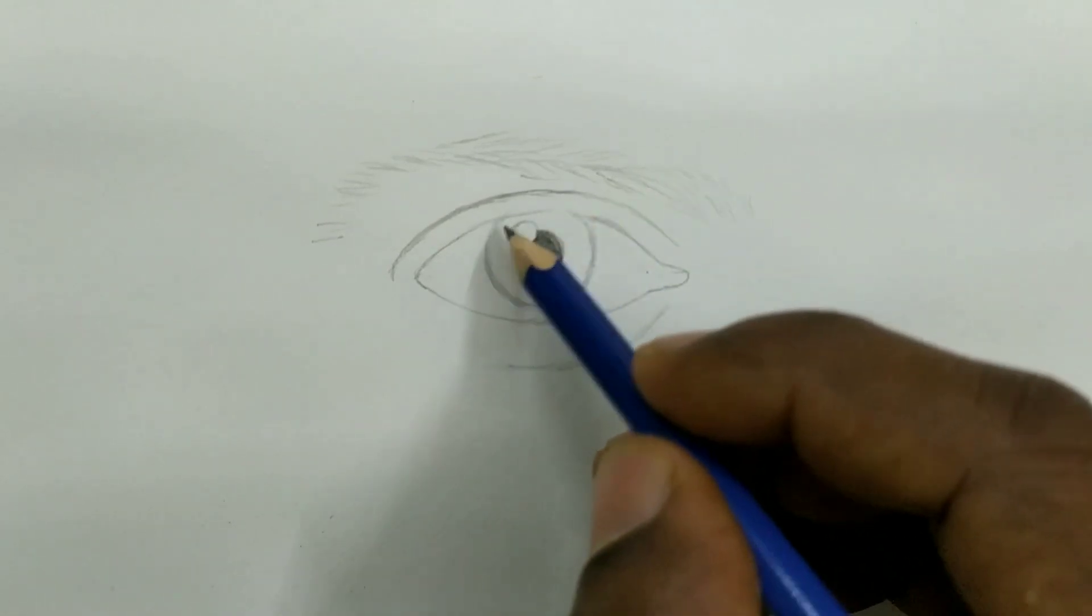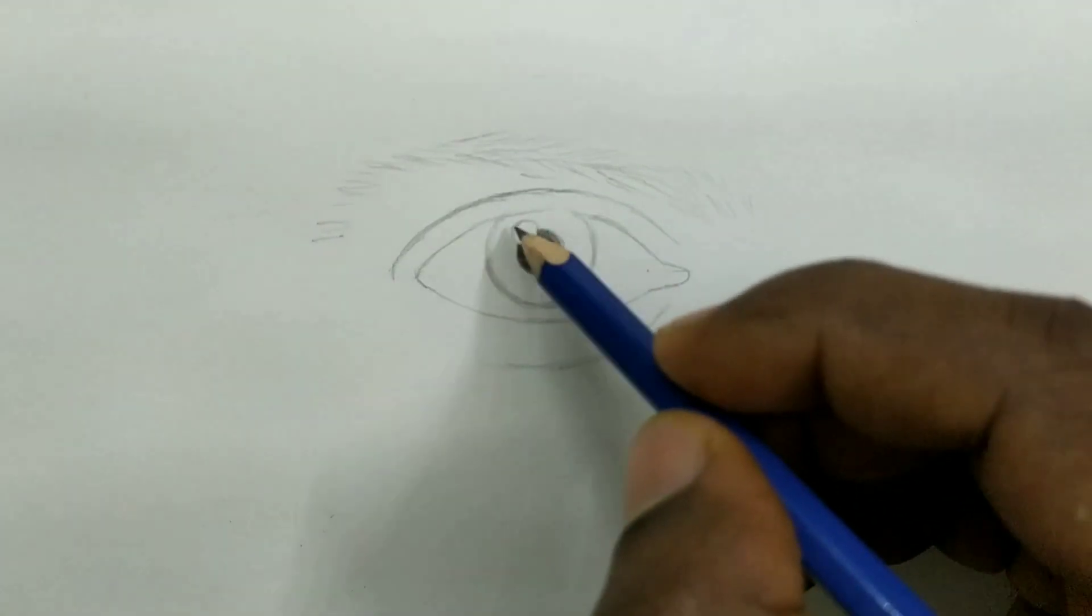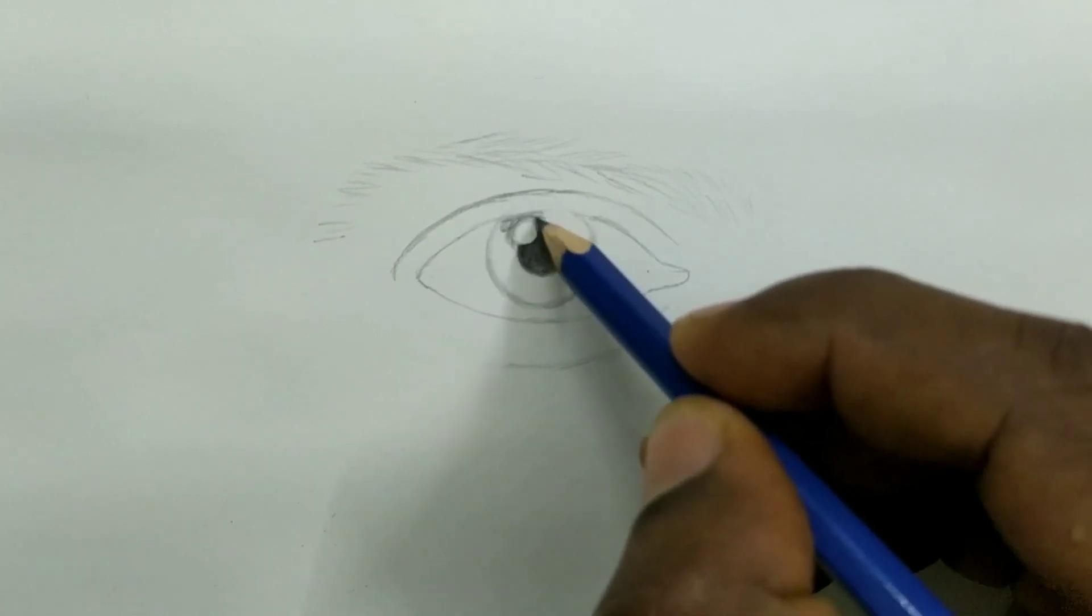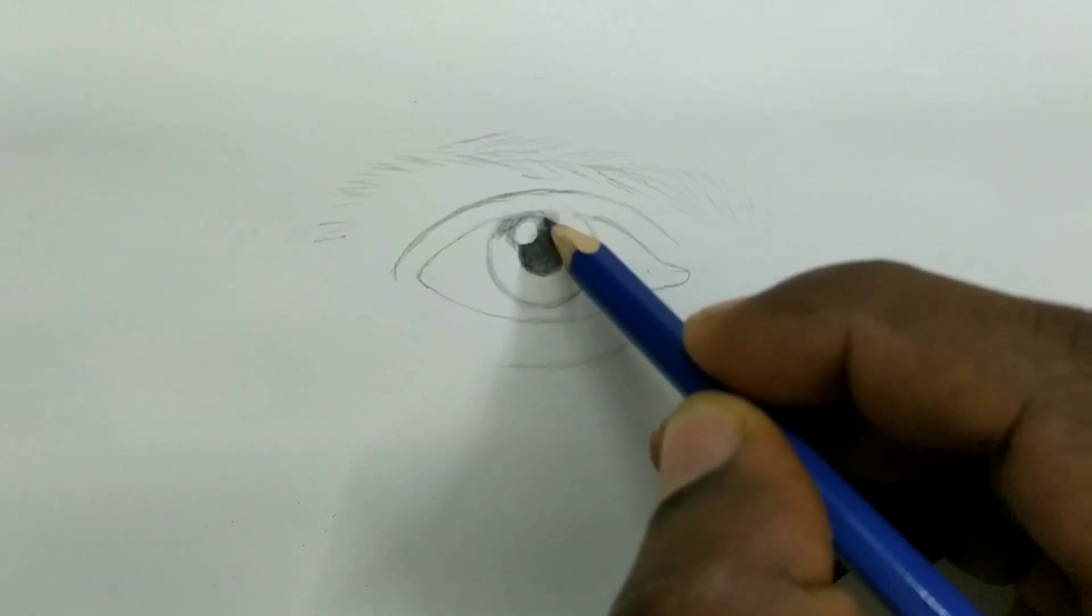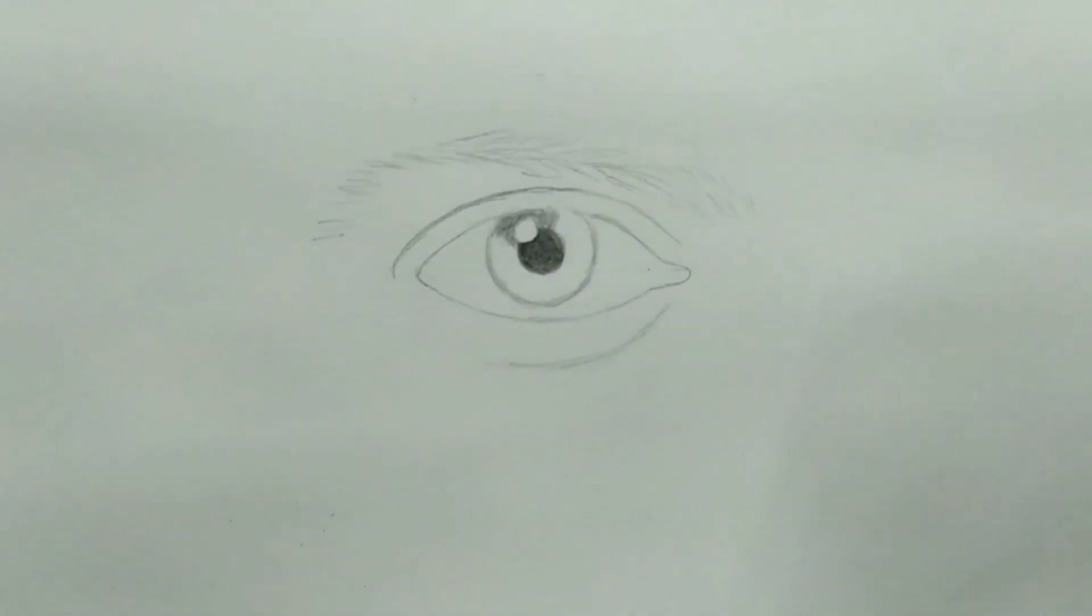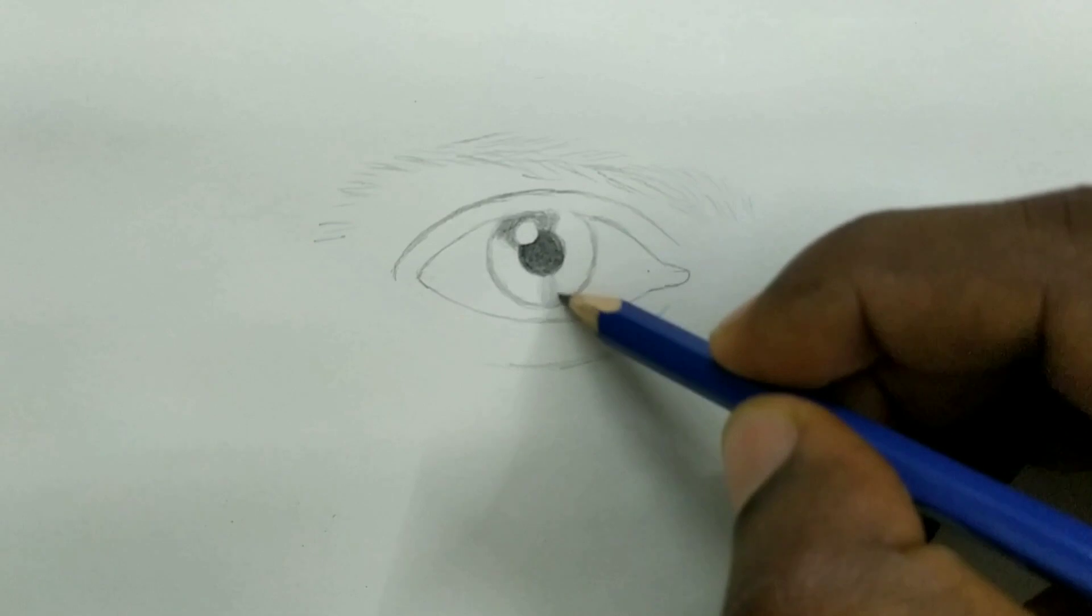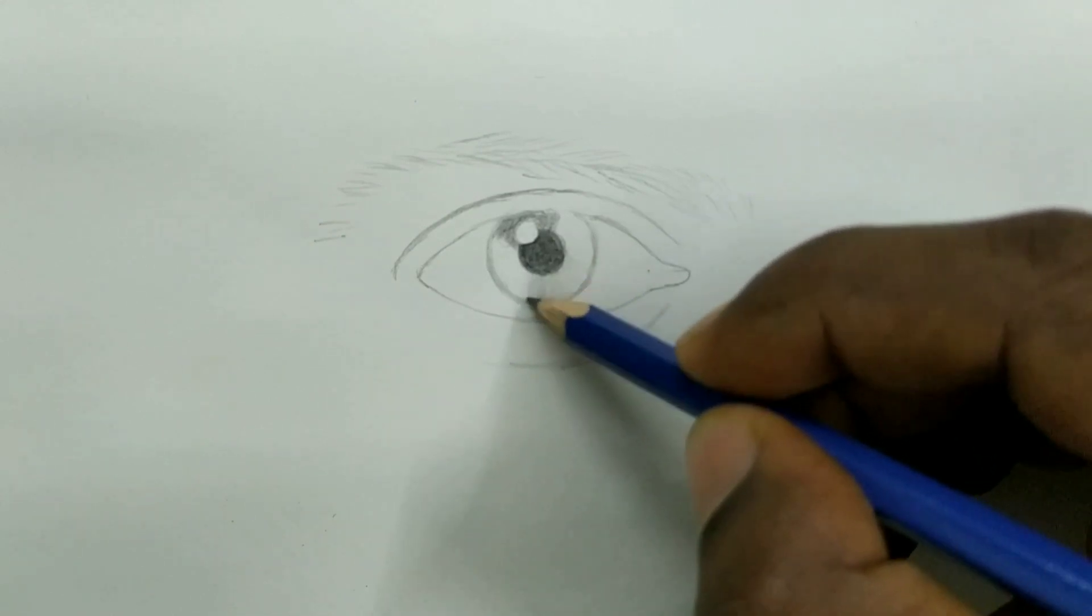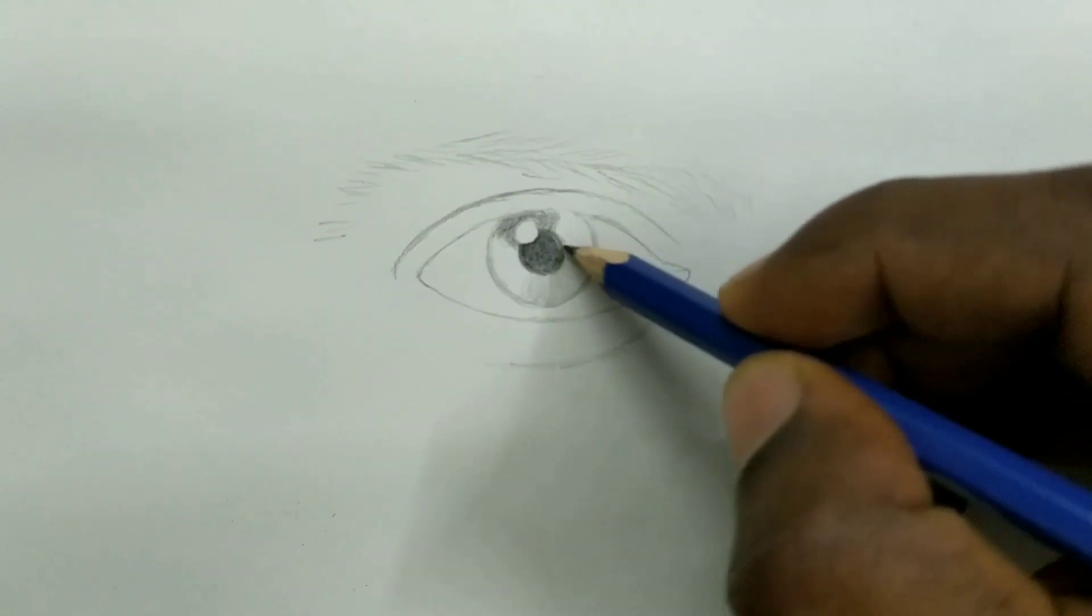And now we will make this area little bit darker, not more than that pupil. Add light shades because we can make it darker later stage. And in the iris area this area will be the darker area. In iris area I am not talking about the pupil, pupil is the darkest area. See just opposite that we are applying very little shade because that area we are going to left as the lightest shade in the iris.